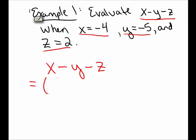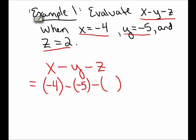I will take out the x and replace it with empty parentheses, minus take out the y and replace it with empty parentheses, minus take out the z and replace it with empty parentheses. Inside the first set of parentheses I place the value of x, which is negative 4. Inside the second set I put the value of y, which is negative 5. And inside the third set I put the value of z, which is 2.